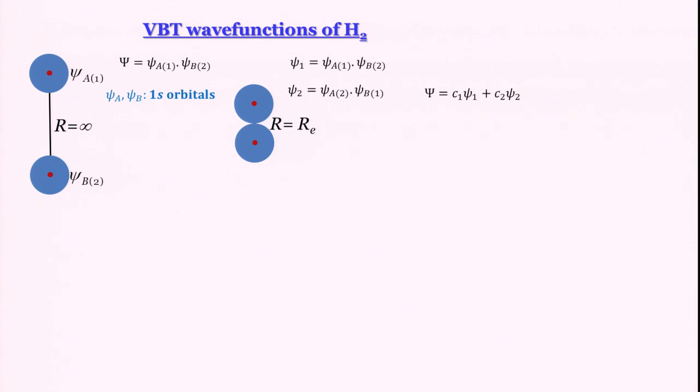This wave function by the way is called Heitler and London wave function after the names of the scientists who proposed them. Heitler and London did this phenomenal exercise of proposing a wave function that made sense, and how much sense is something that we are going to see shortly.